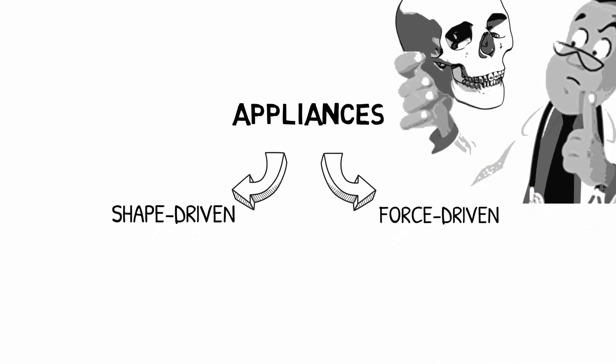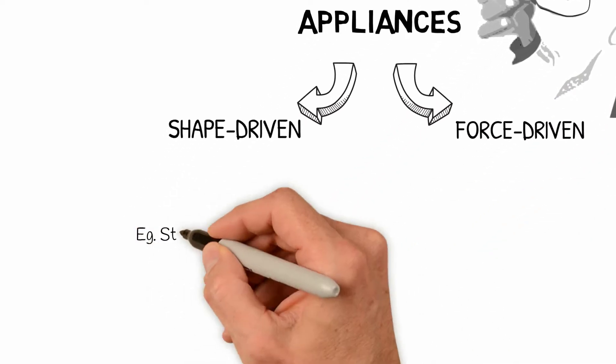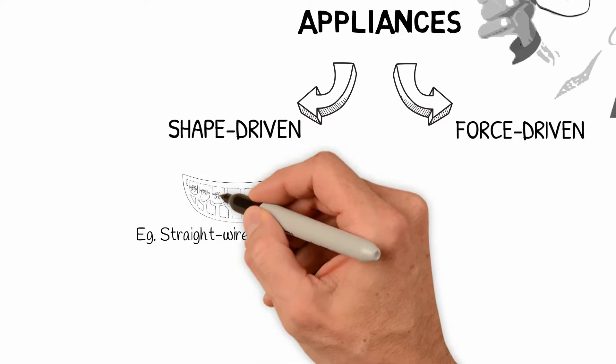As examples of appliances that are shape-driven, we can mention any straight-wire technique, both the conventional and lingual ones.